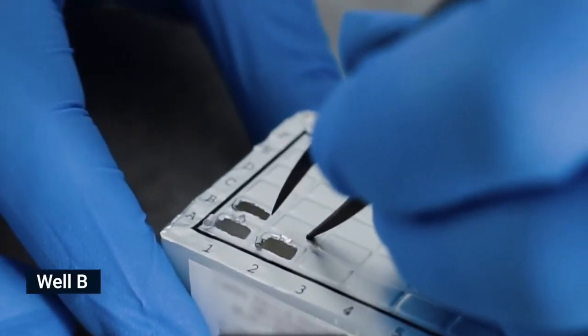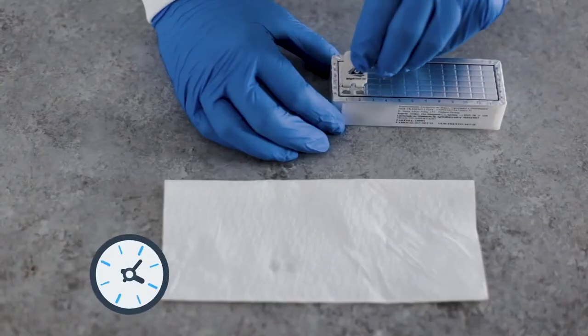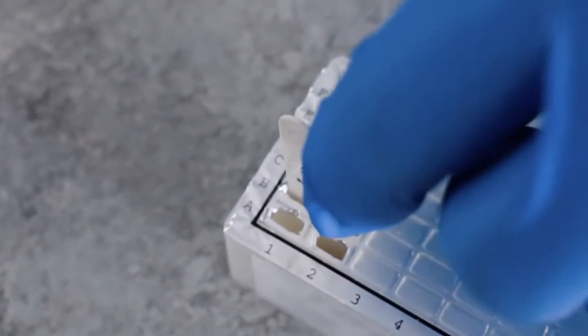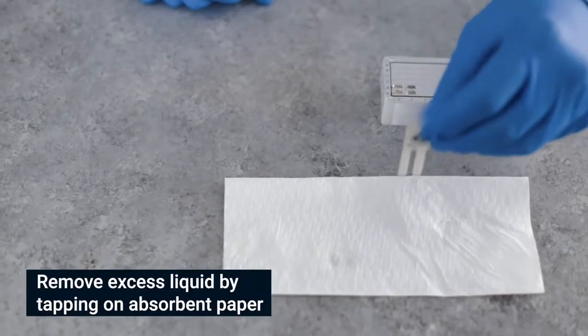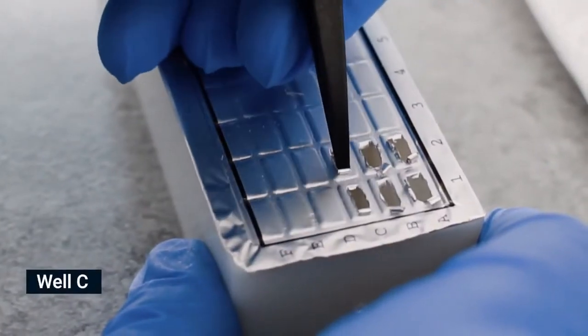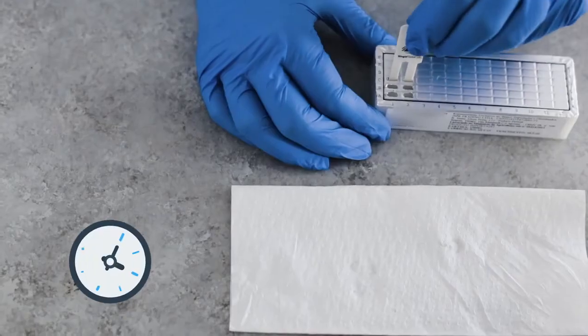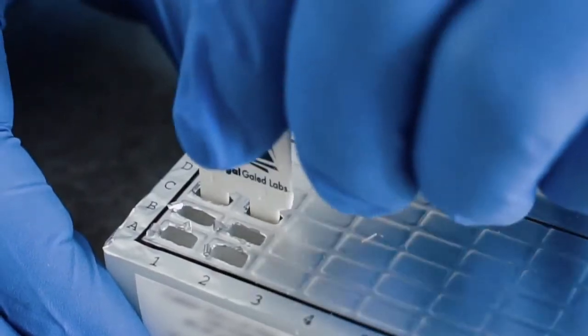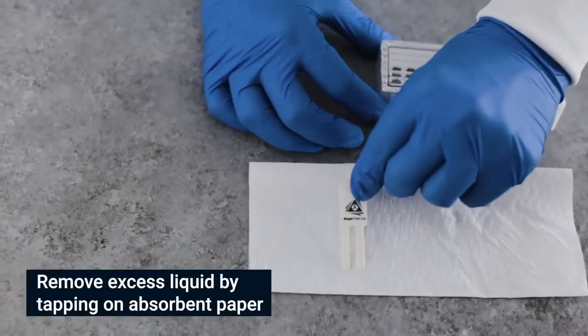Pierce the foil of the next wells in row B. Shake off excess liquid and insert comb for 2 minutes. Move the teeth at least twice during each step. Remove excess liquid. Pierce the foil of the next wells in row C. Shake off excess liquid and insert comb for 10 minutes. Move the teeth at least twice during each step. Remove excess liquid.